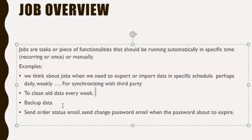For backup purposes we can also use jobs. We have custom jobs, for example, to send order status emails or order confirmation emails. A job might run every five minutes to check if there are newly placed orders and send confirmation emails to customers. We also have jobs to send change-password emails when a customer's password is about to expire.